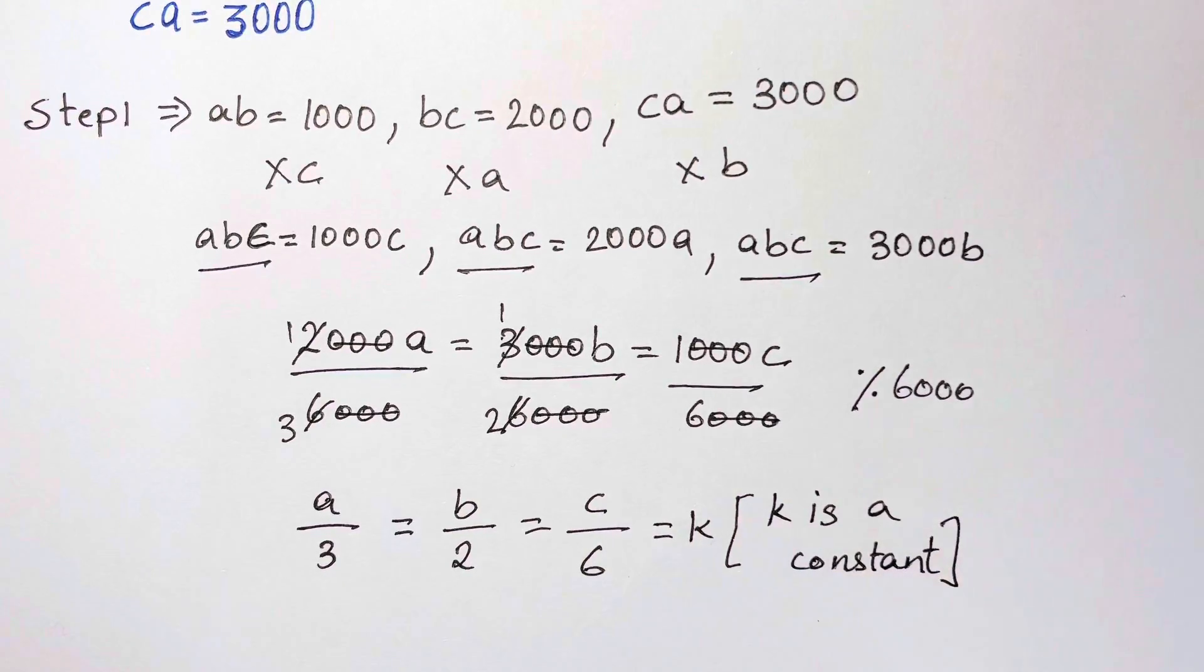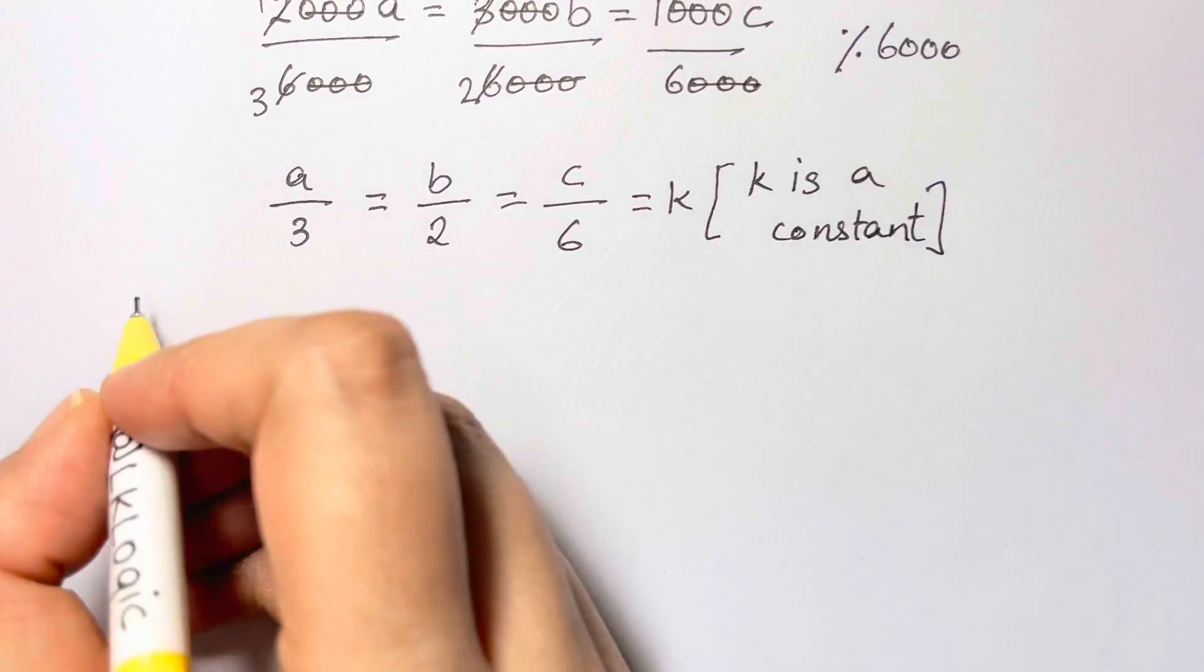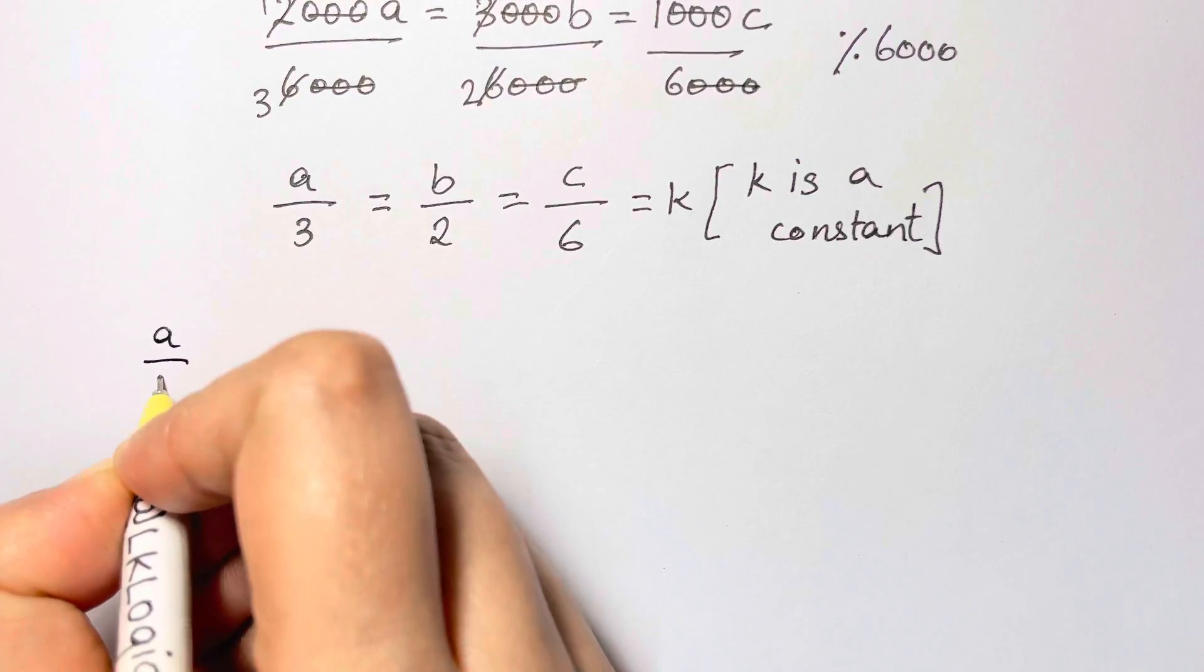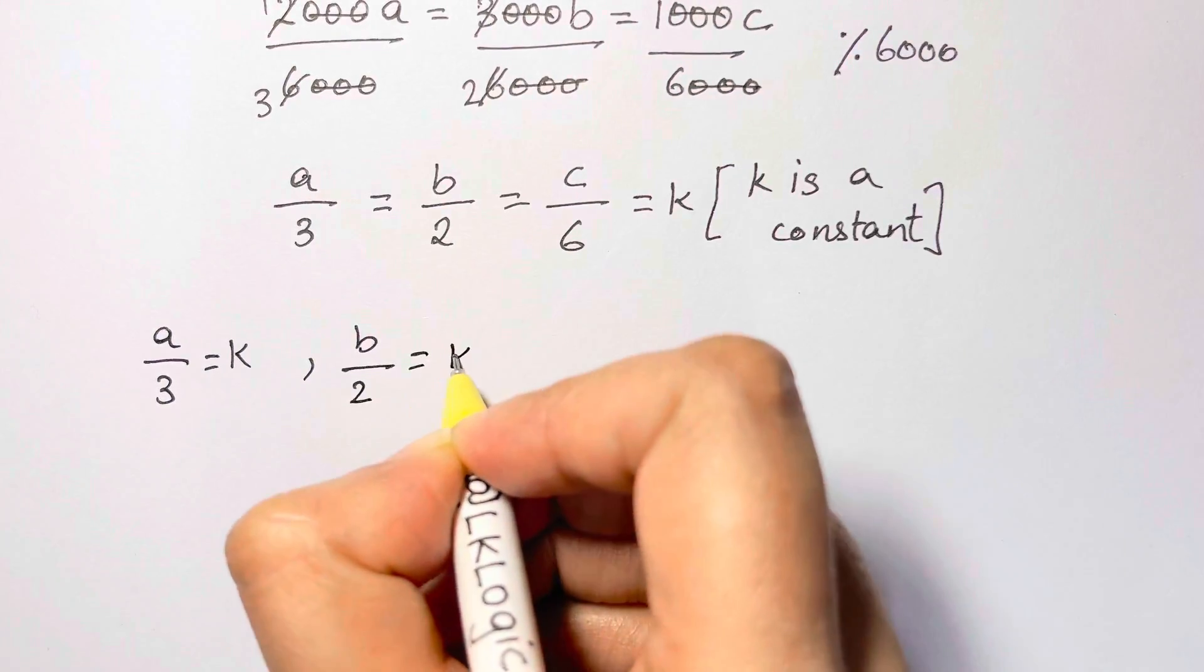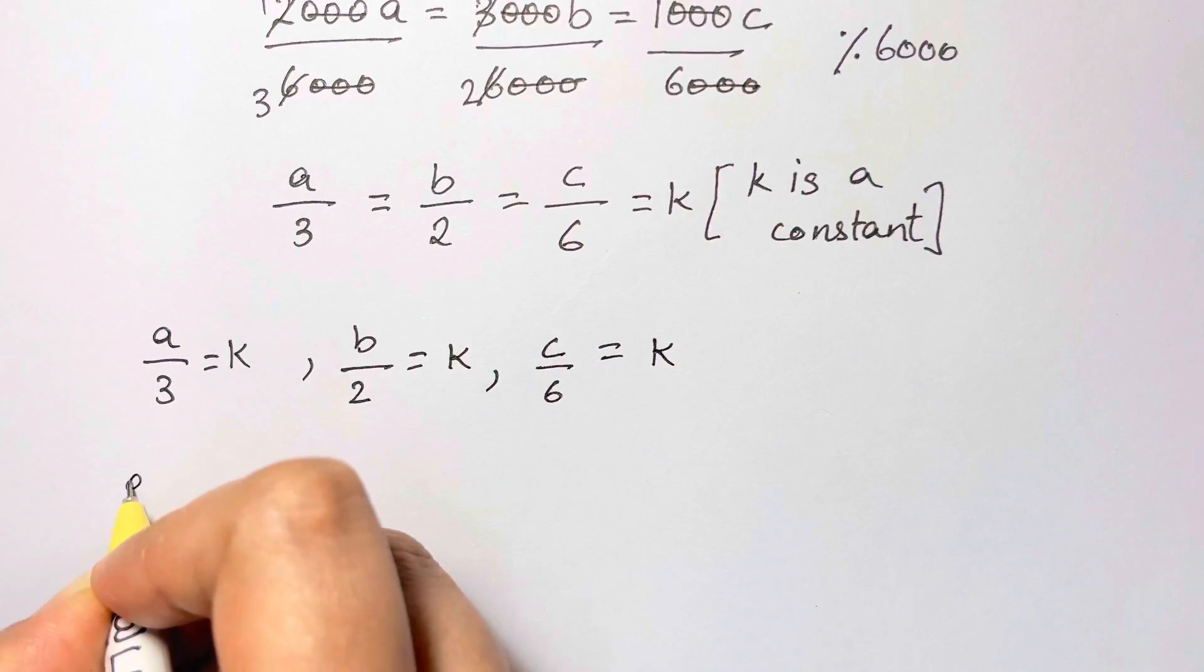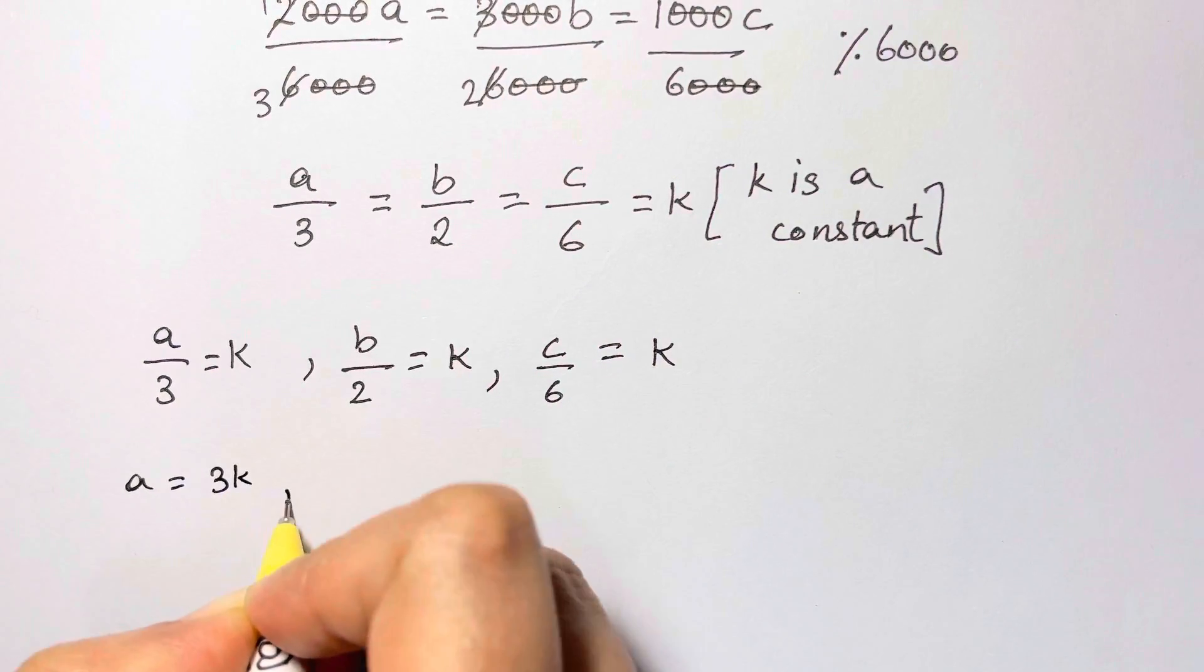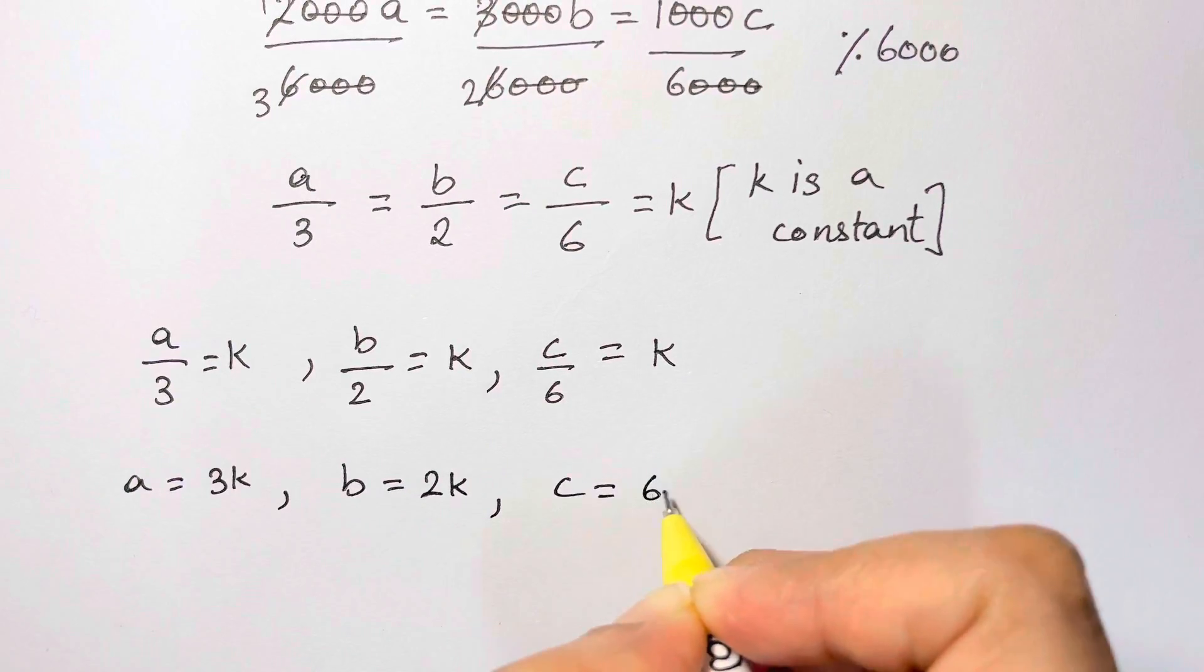Now, what do we do? After this step, let's equate that to the constant. So we have a over 3 is equal to k. Then we have b over 2 is equal to k. And c over 6 is equal to k. So we have a is equal to 3k, b is equal to 2k, and c is equal to 6k.